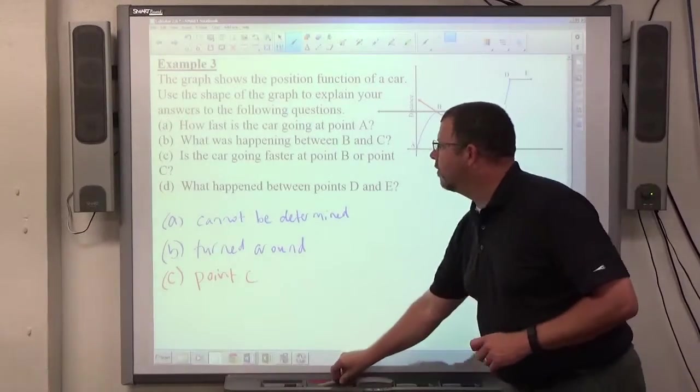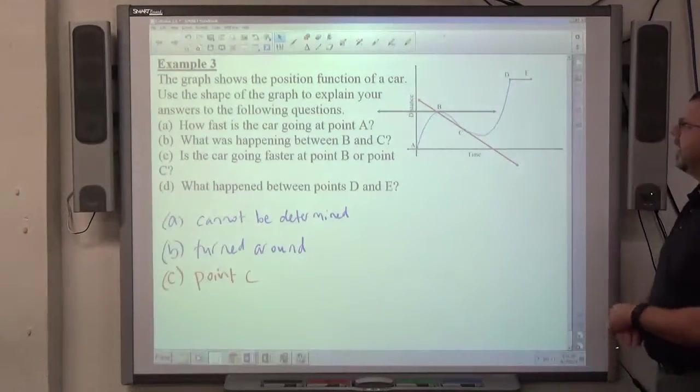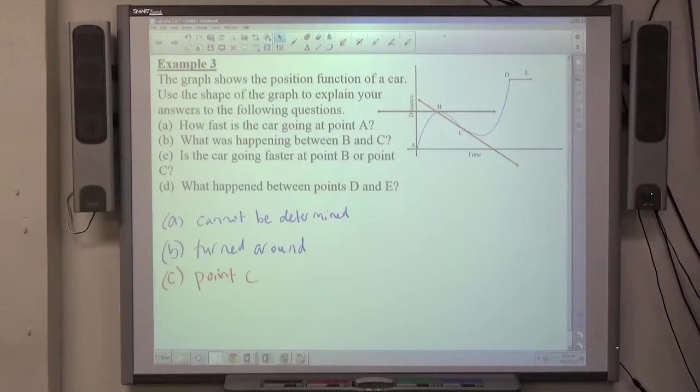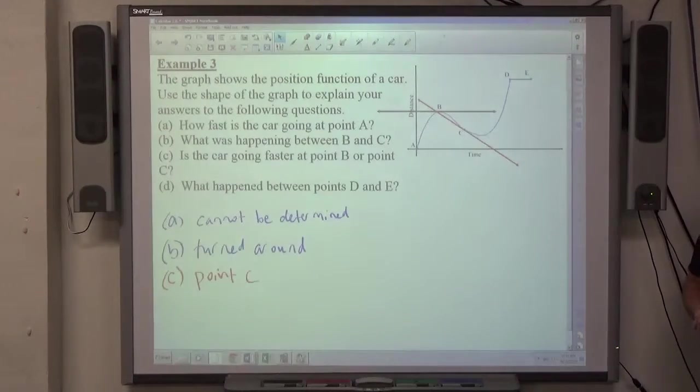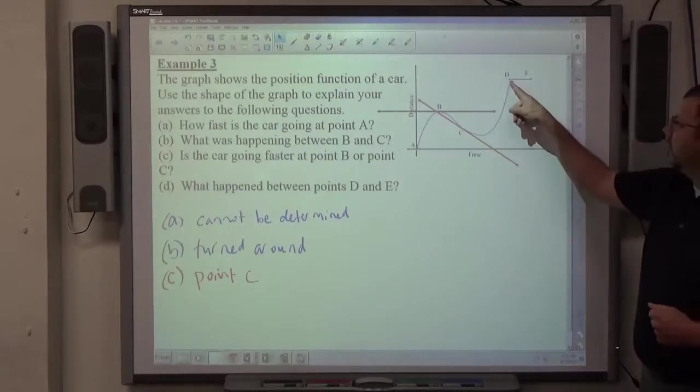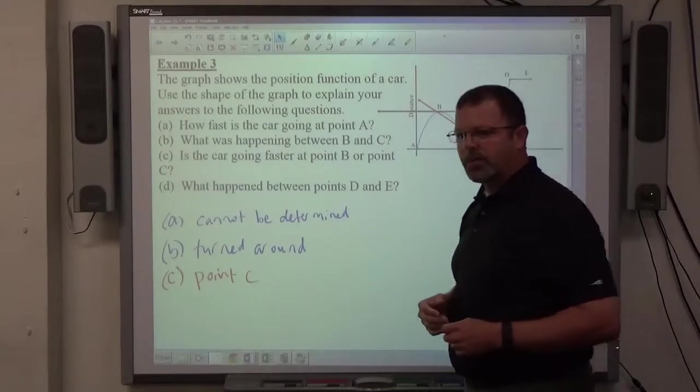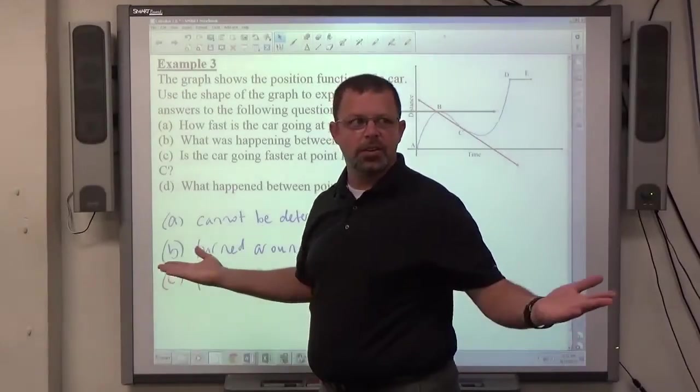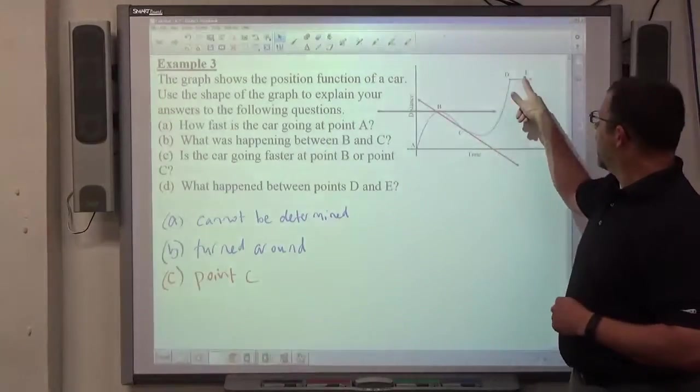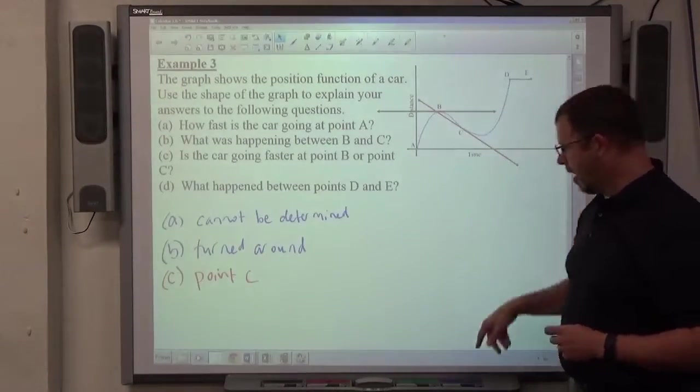And then, finally, what happened between points D and E? Anybody have a guess? Stop. He stopped. The distance isn't changing. Time is changing. So, I'm going somewhere. If I stop, time continues to go on, but my distance isn't changing. Therefore, that horizontal line happens in my graph.